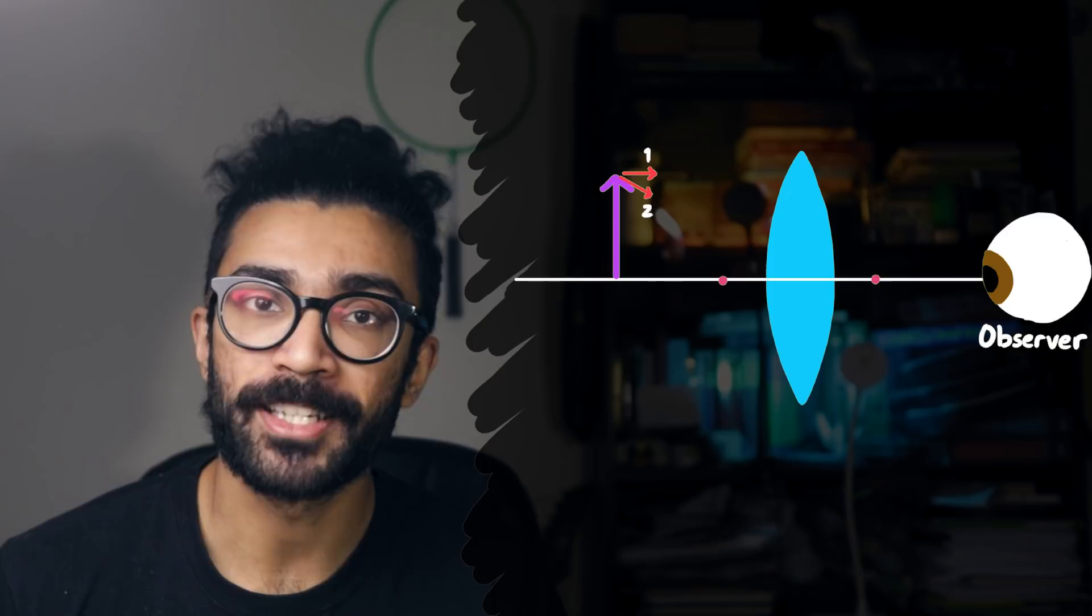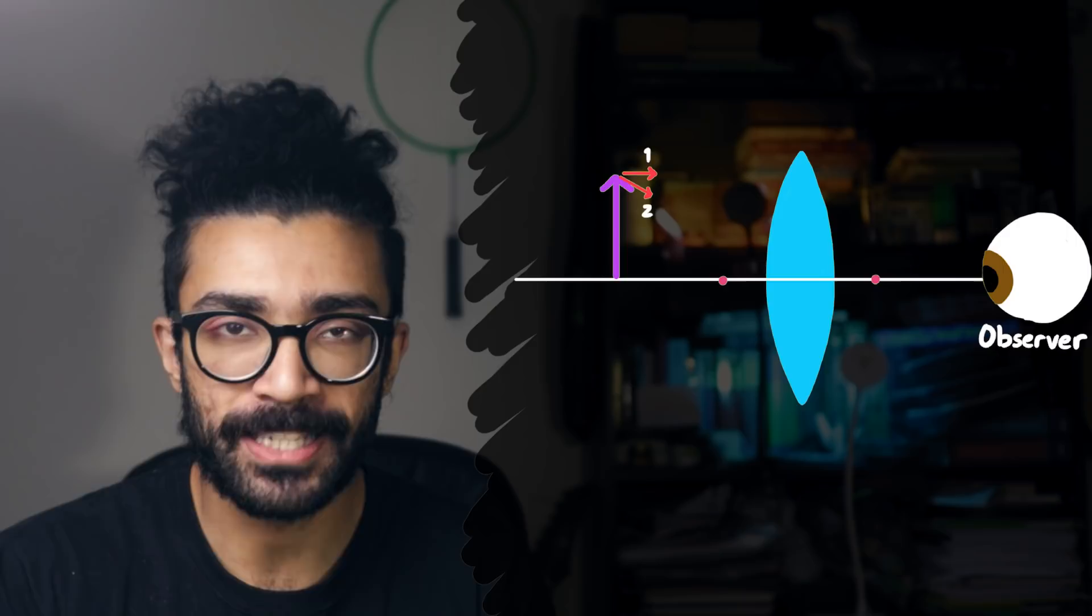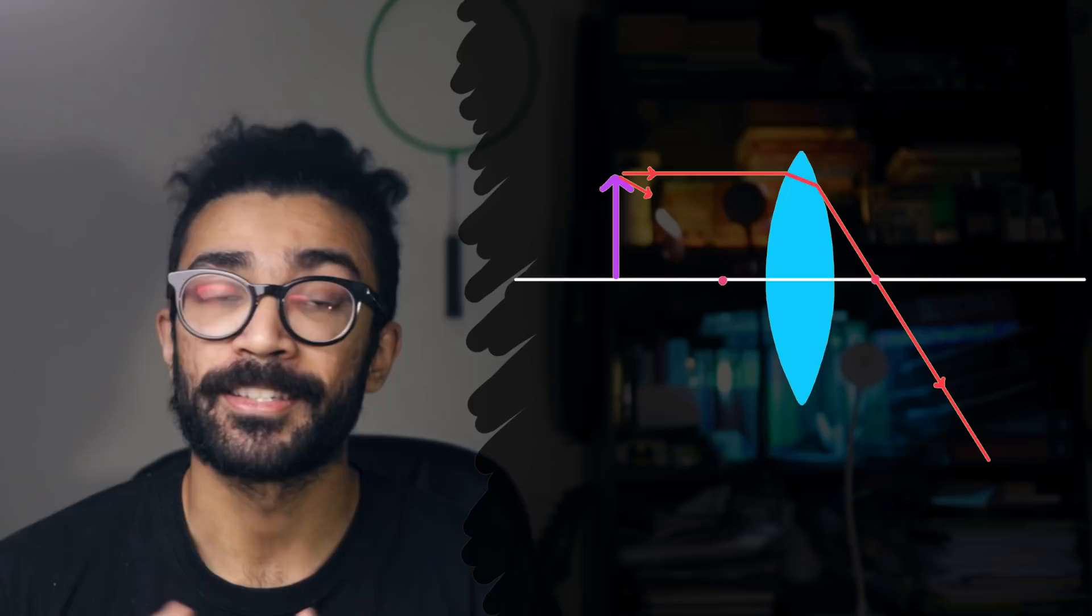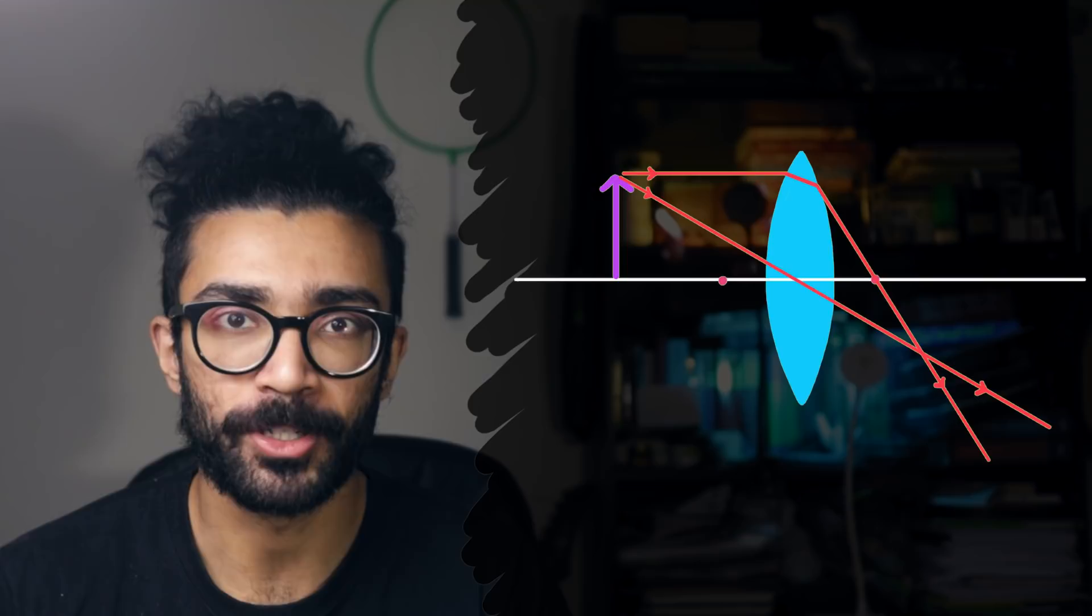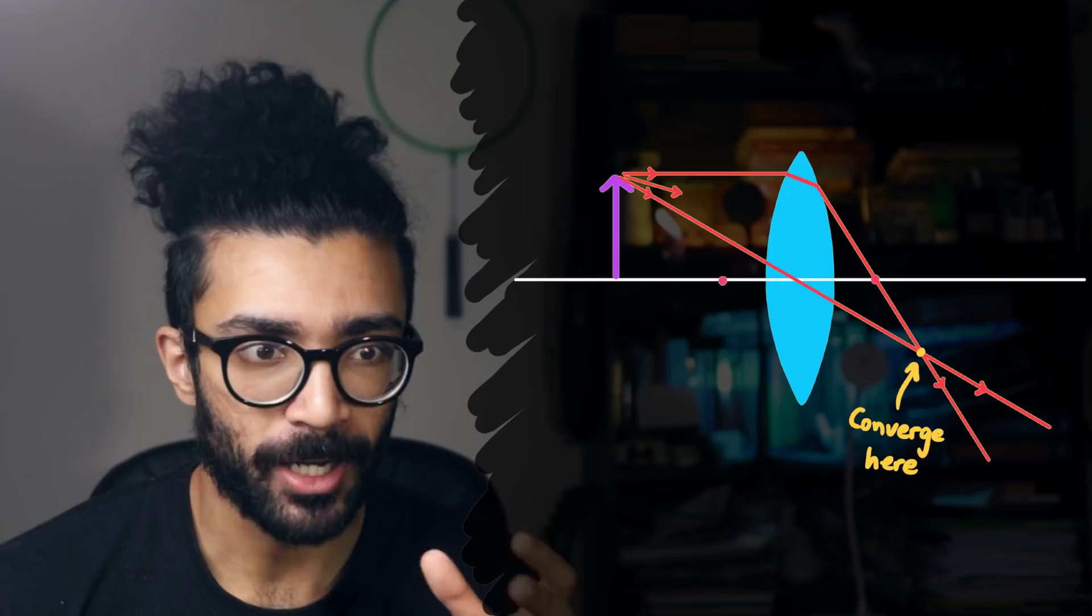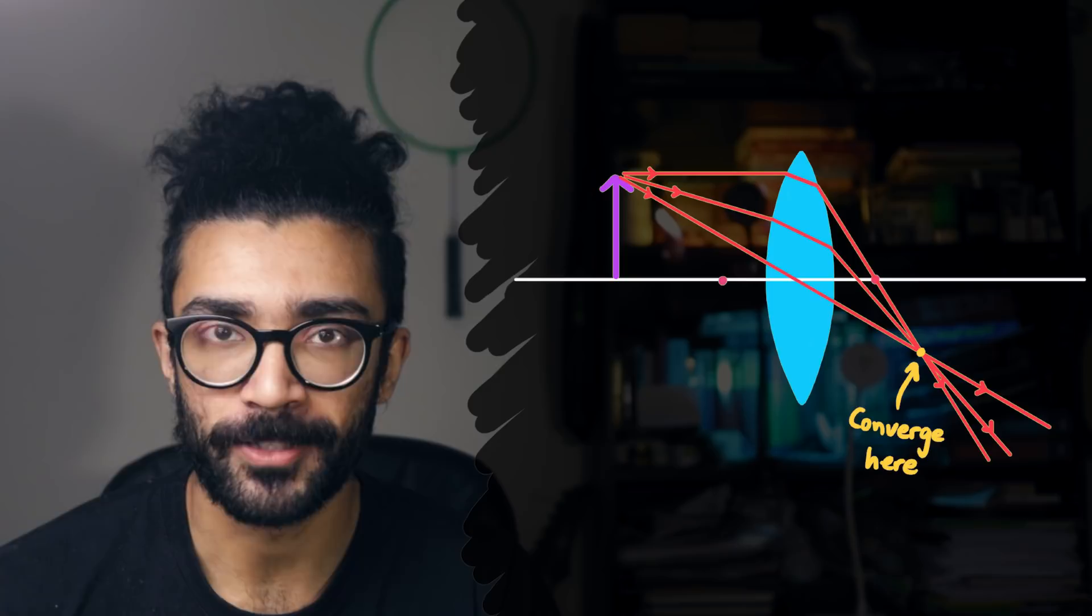If we consider these two rays of light coming from the tip of our object arrow, then the first one is moving parallel to the optical axis. Therefore, when it passes through the lens, it will be refracted so that it's passing through the focal point. The second ray of light is the one that is passing directly through the center of the lens, which we've said will continue on in the same direction. And at this point, we see that these two rays of light will converge or meet at this point here. It's worth mentioning that if we considered other rays of light coming from the tip of the arrow and moving through our lens, then they would also converge at this point.